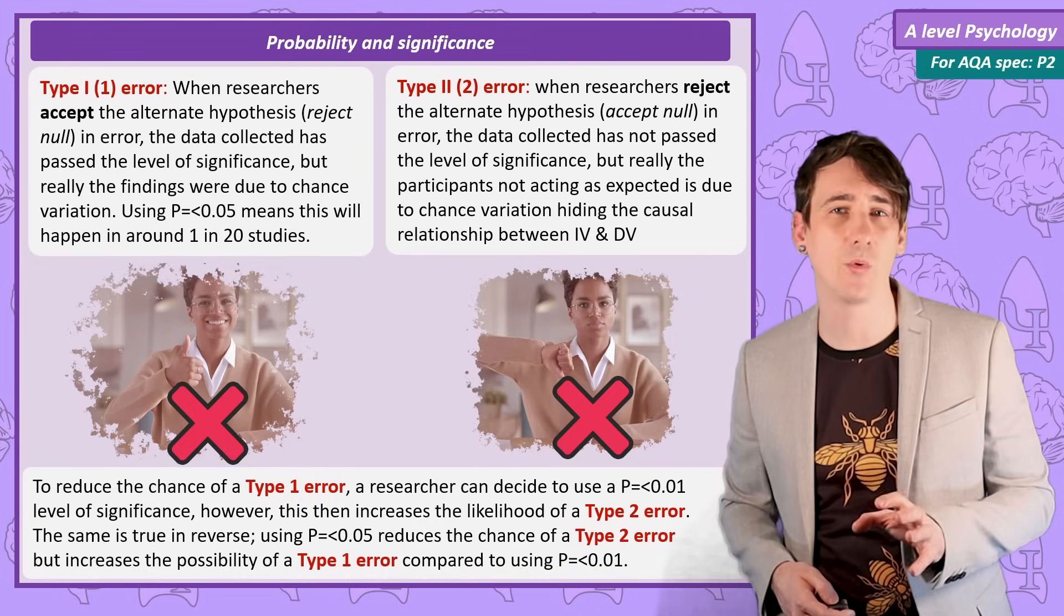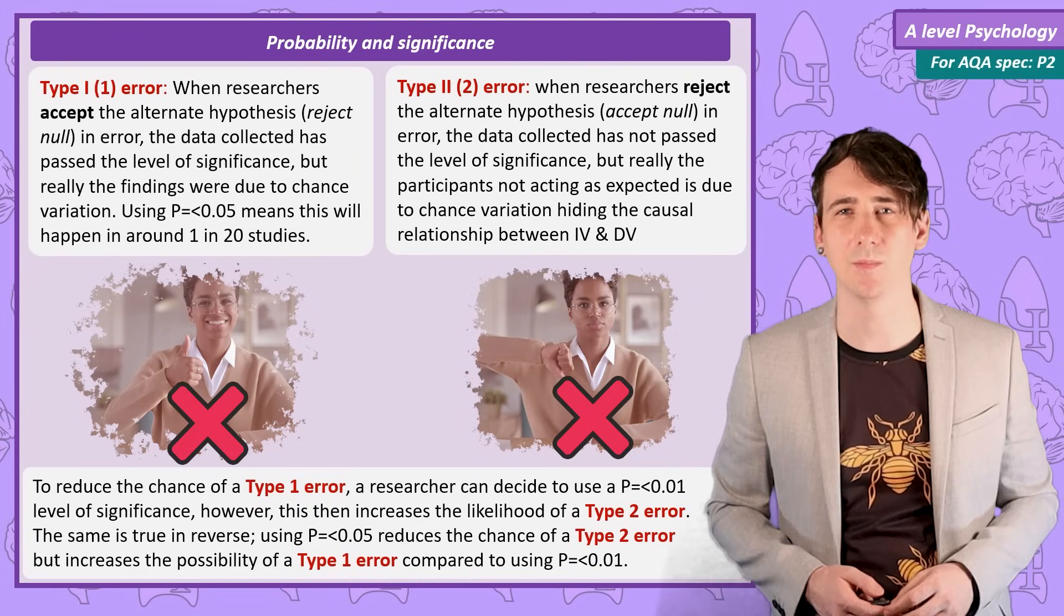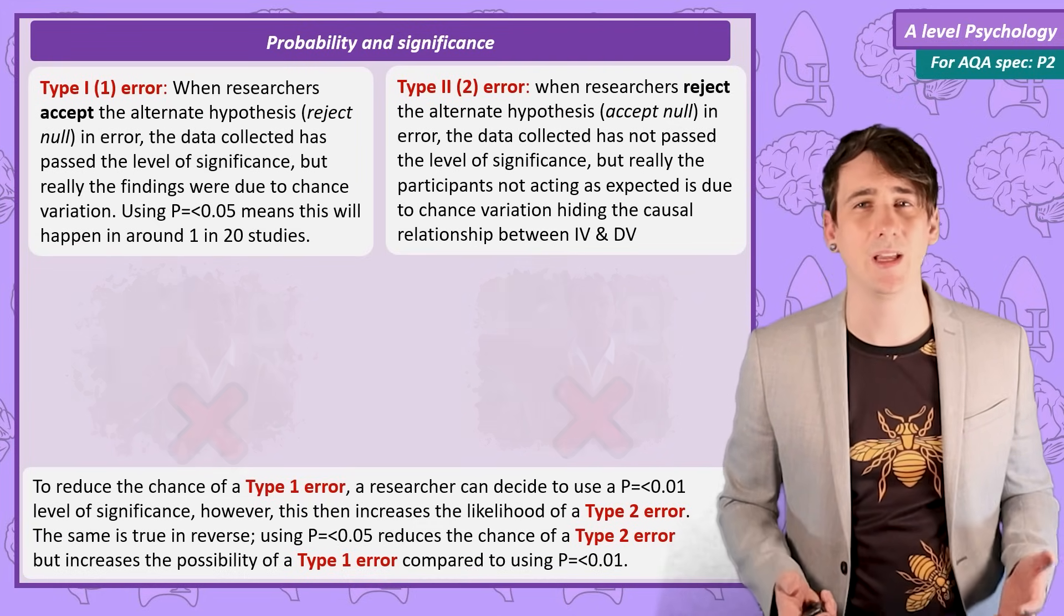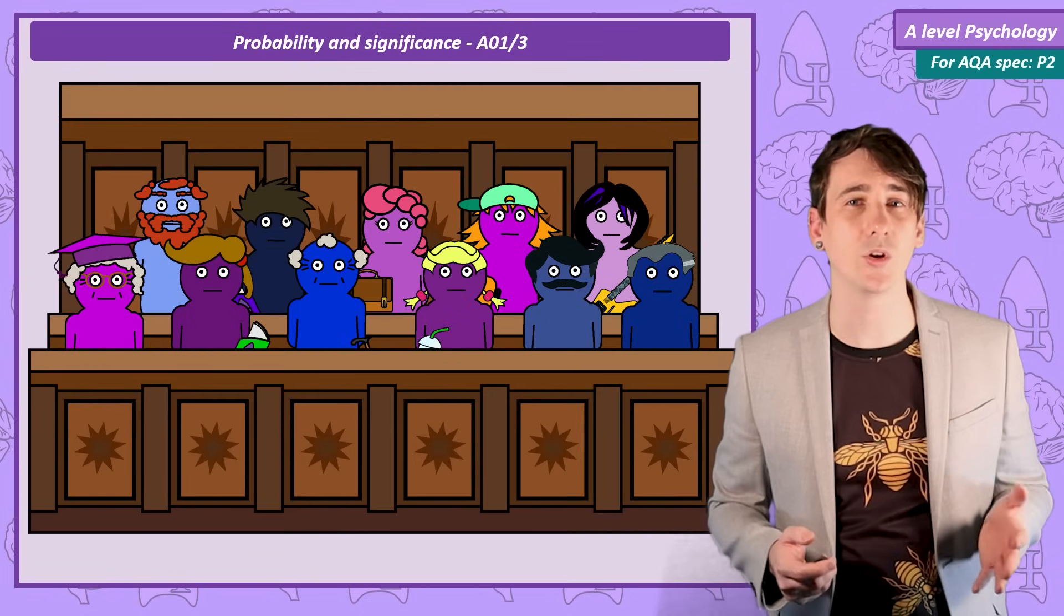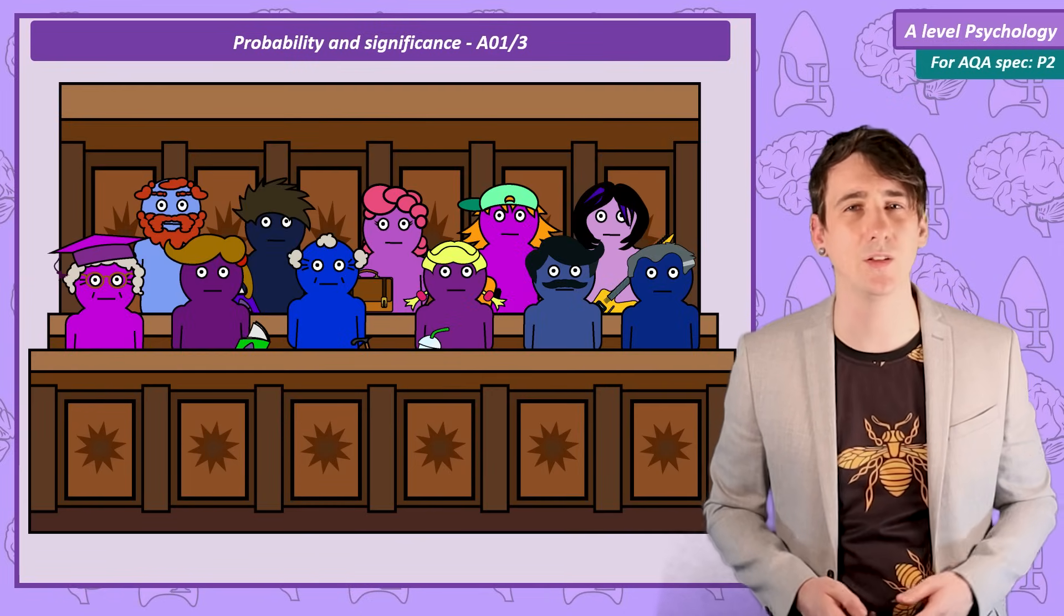All this talk of Type 1 and Type 2 errors is a little confusing. To make it a little more understandable, it's a good idea to think of this problem in the context of a courtroom and the decision a jury has to make about the guilt or innocence of a defendant.